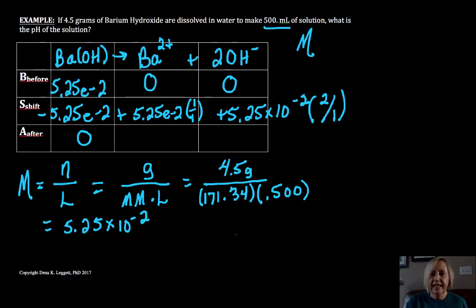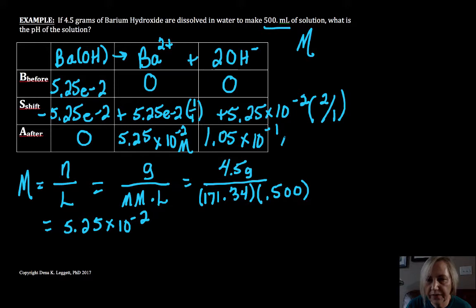I didn't get this number, so let me do this real quick. 5.25 times 10 to the minus 2 times 2 gives me 1.05 times 10 to the minus 1, and this is 5.25 times 10 to the minus 2. And these are all molarities, we've accounted for any volume changes.